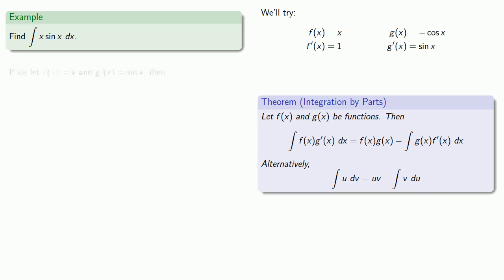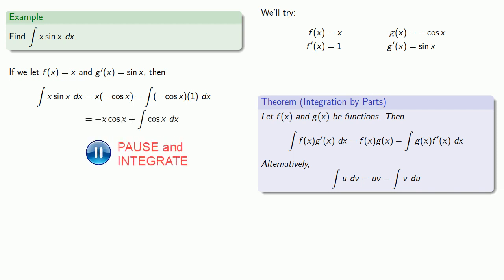So if we let f(x) = x and g'(x) = sin x, then the integration by parts theorem tells us that our integral of x sin x is f(x)g(x) minus the integral of g(x)f'(x). This equals -x cos x + sin x. And don't forget that constant of integration.